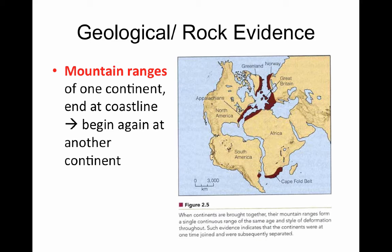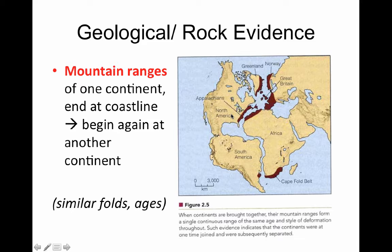Wegener also found geological or rock evidence. Mountain ranges extend over the continents, and this could have only formed if Pangaea was actually the supercontinent. In North America, we have the Appalachian Mountains that extend into Europe in the Alps. They hypothesize that was once one giant mountain range. These mountain ranges also have similar ages in their rocks and similar folds or rock layers.